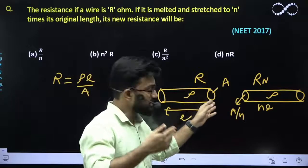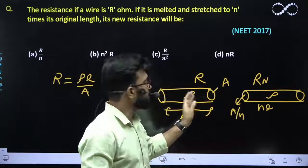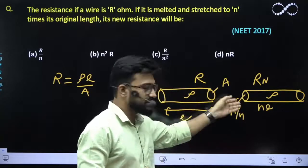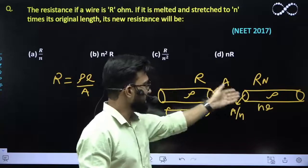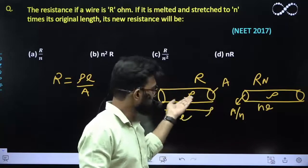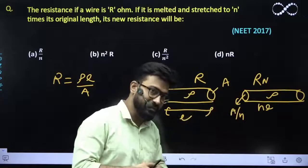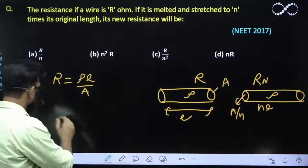The resistivity of a material does not depend upon the length and area, it only depends upon the material which has been taken. So they use the same material because this has been melted to become this resistor, so the resistivity of both of them would be similar.